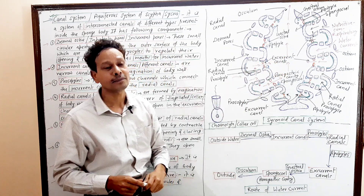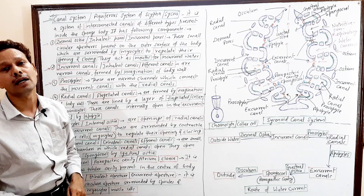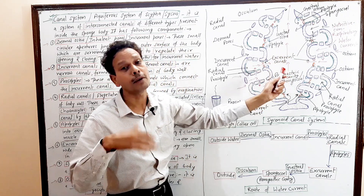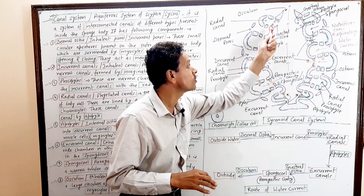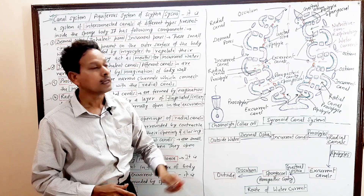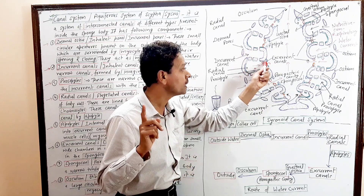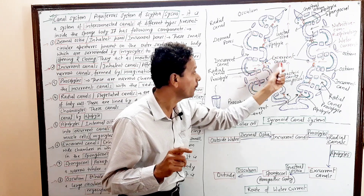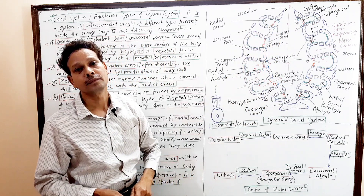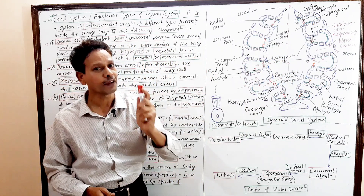These are Excurrent Canals — efferent canals. These different canals open into the main body cavity of the sponge through small apertures called Gastral Ostia. The Excurrent Canals open into the main body cavity — the Spongocoel — through Gastral Ostia.